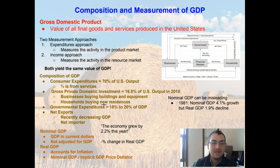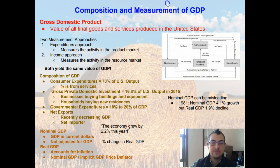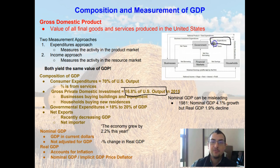For households, buying a new residence is also considered gross private domestic investment. The key is what businesses and households are buying for the long term — equipment is long term, new residences are long term, and buildings are long term investments. So gross private domestic investment made up 16.8% of U.S. output in 2015. Government expenditures — how much the government is spending — is the next component.